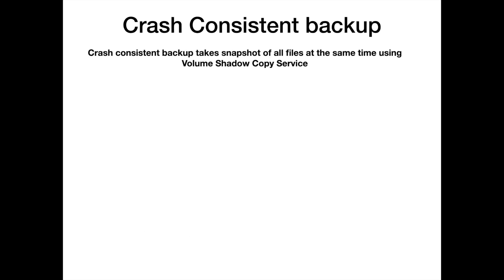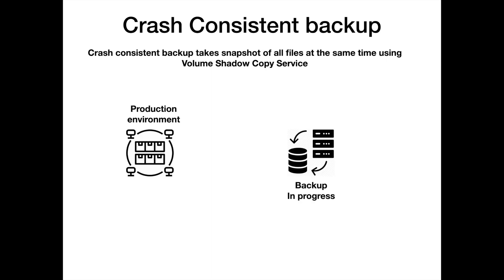Crash Consistent Backup takes a snapshot of all the files at the same time using the Volume Shadow Copy service. What it really does is it takes backup from the snapshot, and as a consequence, restores are available for point-in-time recovery and are more consistent in terms of the versions of the files available.